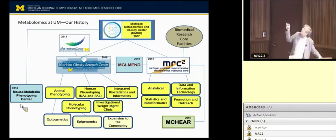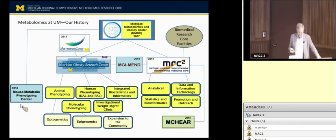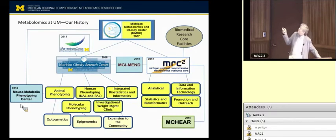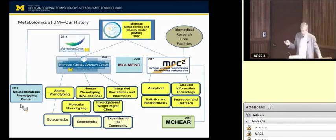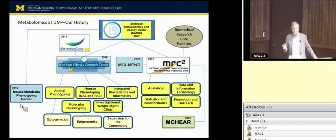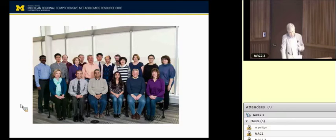From there we got another grant called M-CHAIR, really just to get a lot of samples coming in — though we have yet to see samples submitted. Within MRC Squared, we have an analytical core led by Sue Pentothor and Bob Kennedy in chemistry, a statistics and bioinformatics core led by George McLevis, a data informatics technology core led by Brian Athey with Sasha Raskin at its heart, and a promotion and outreach core. All of this is really run by Maureen Kochman — the glue that keeps the whole thing together.